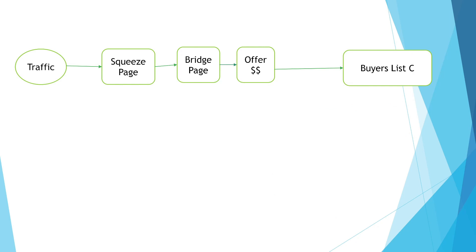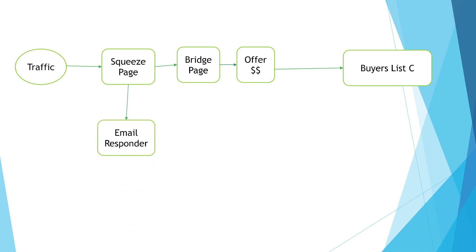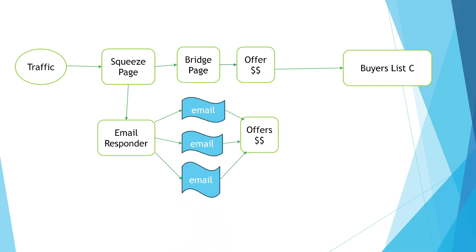Path number two: when they submit their details via the squeeze page, their details are sent to an email autoresponder. That email autoresponder sends out multiple emails with multiple offers. When the traffic decides to buy, they then get moved into buyers list C. They will get more offers, sometimes known as low to mid-ticket offers, and when they buy, they move into buyers list B.